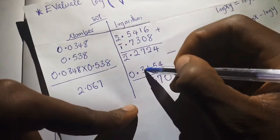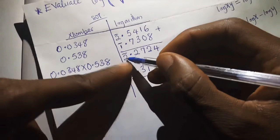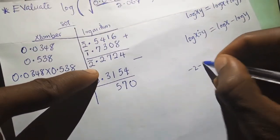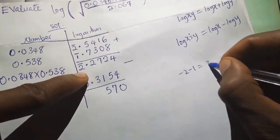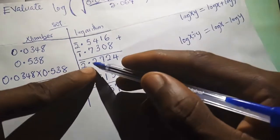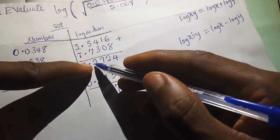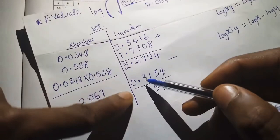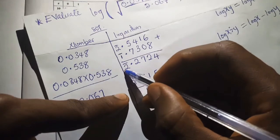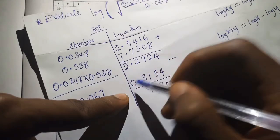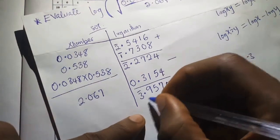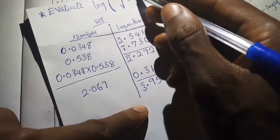For the characteristic: 2 minus 3 requires borrowing. Since bar 2 is negative 2, removing one gives negative 3. We bring one to the mantissa making it 12, and 12 minus 3 is 9. The remaining characteristic is negative 3 minus 0, which is negative 3, written as bar 3. So the logarithm of the entire expression under the square root is bar 3.9570.